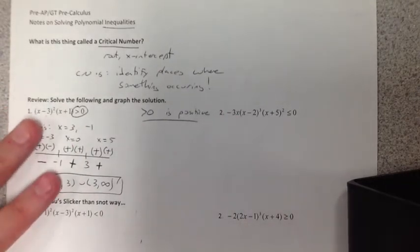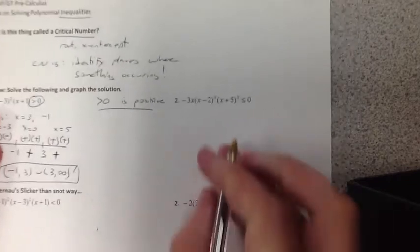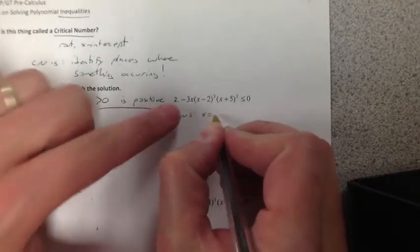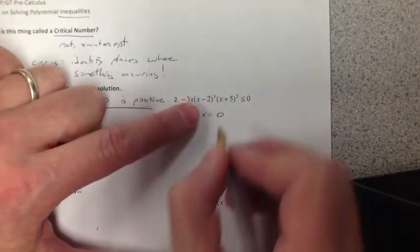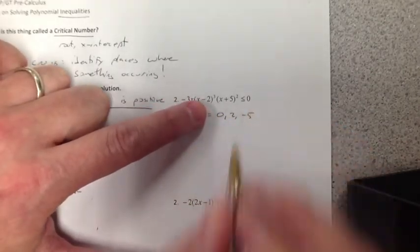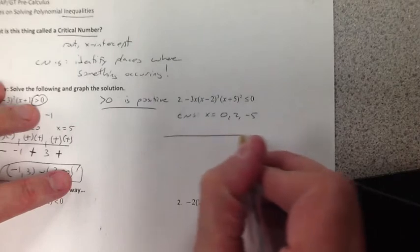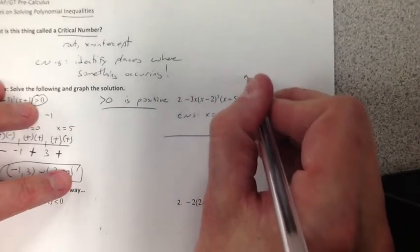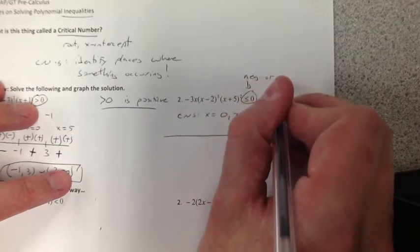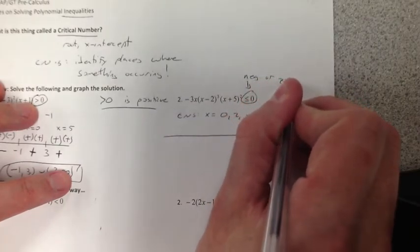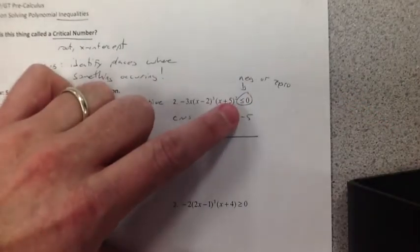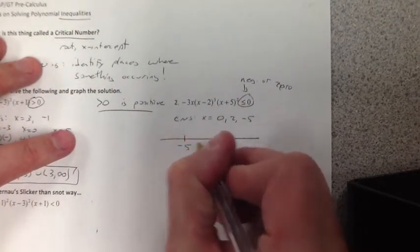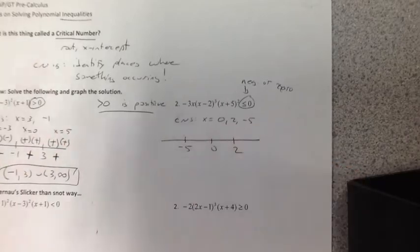And you can look at the graph to do this. We would be positive between negative 1 and 3, or from 3 to infinity. We can't include 3 because 3 is our critical number. And we only want greater than 0. So if we take a look at number 2 here, do the same thing. Get your critical numbers. 0, negative 5. So when I graph my critical numbers, now this time we want less than 0.